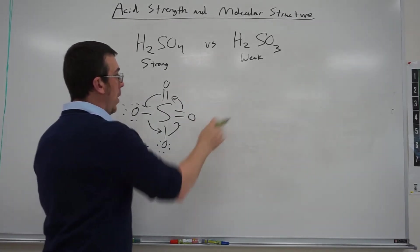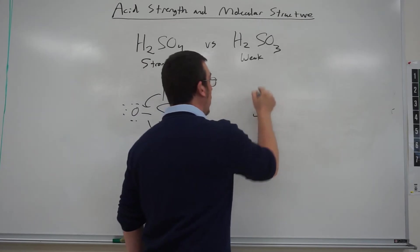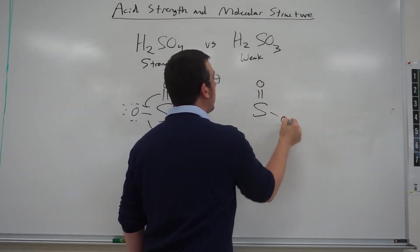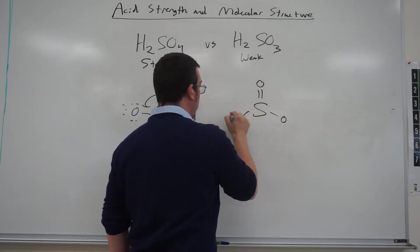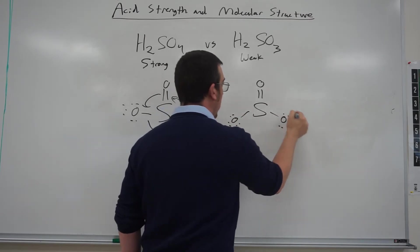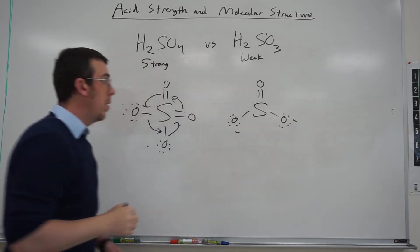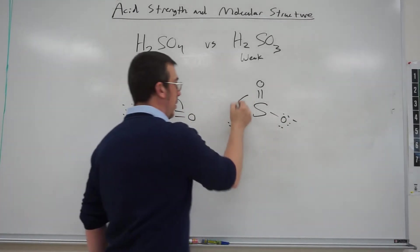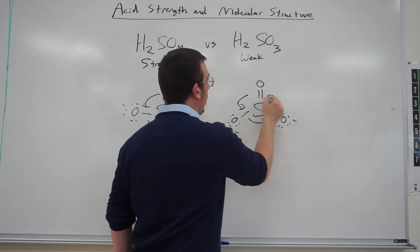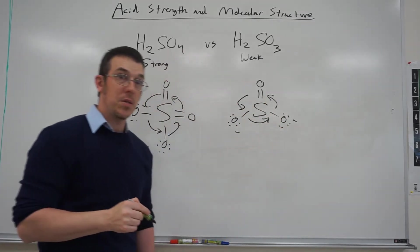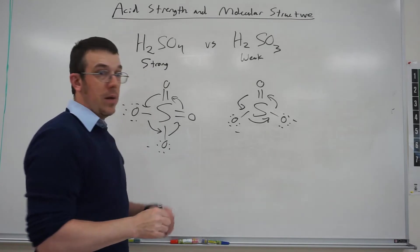Now if we look at the next one here, which is the sulfite ion. It still has negative charge, but if you notice here, this one has one less resonance structure than the sulfate ion does.